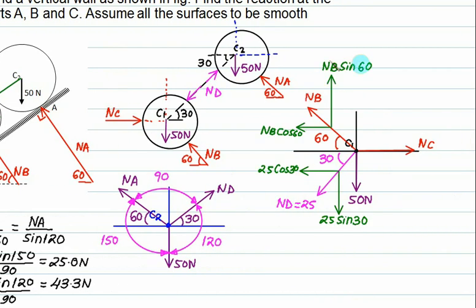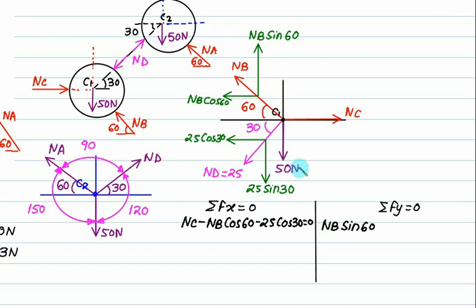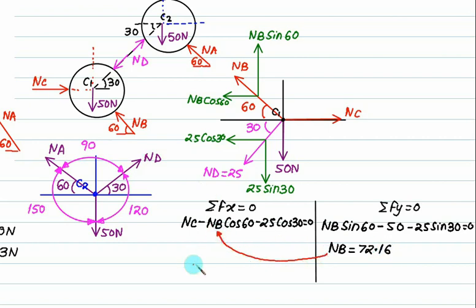Resolve all forces into components. For Sigma Fx: Nc is positive, Nb cos 60° is negative, and 25 cos 30° is negative. Since there are two unknowns, go to Sigma Fy: Nb sin 60° is positive, 50 N is negative, and 25 sin 30° is negative. Solving gives Nb = 72.16 N. Substituting back gives Nc = 57.73 N.